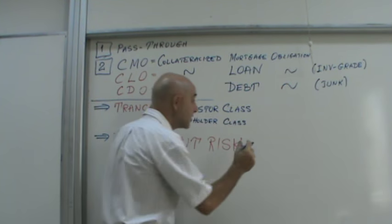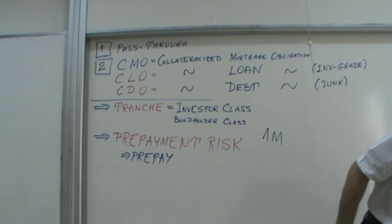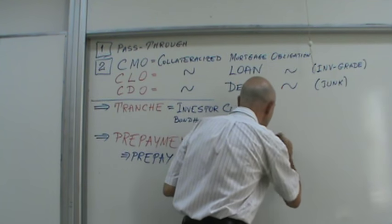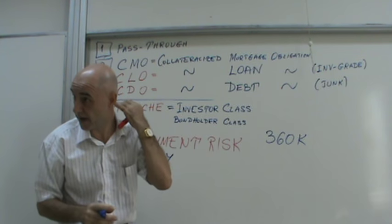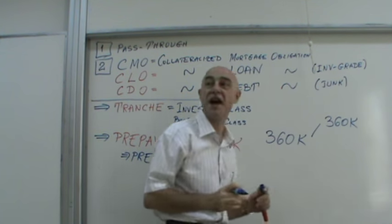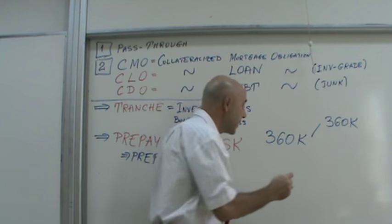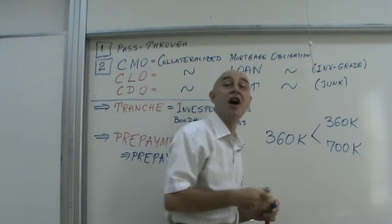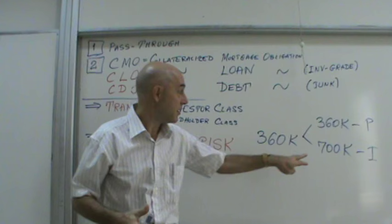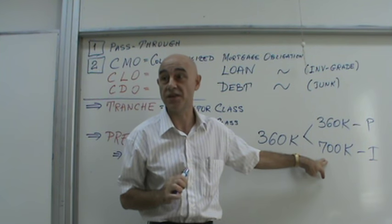A real-world example: my own brother borrowed $360,000 to buy a house in Washington DC. When he makes all his payments, he will pay off $360,000 in principal. But he's going to pay roughly $700,000 in interest — meaning a lot of bankers will get very rich from him.